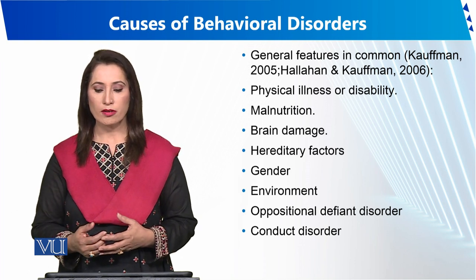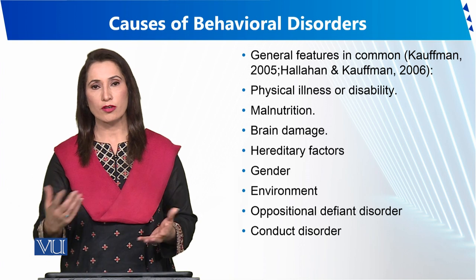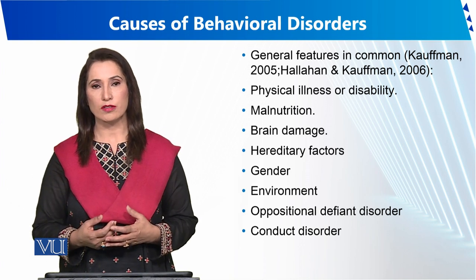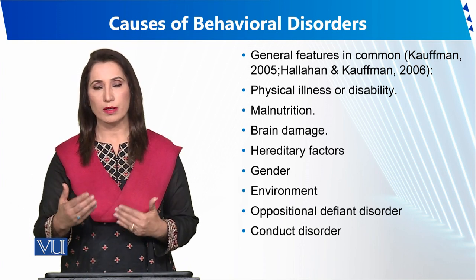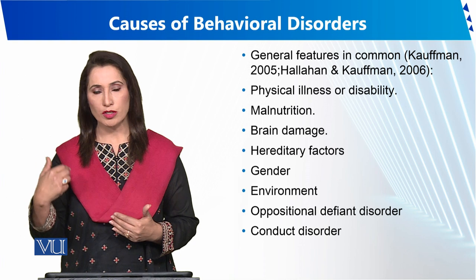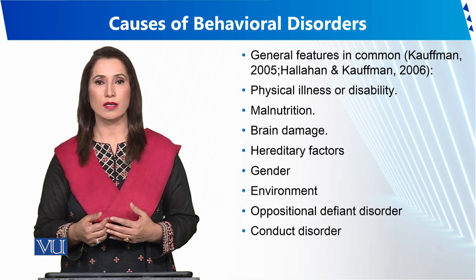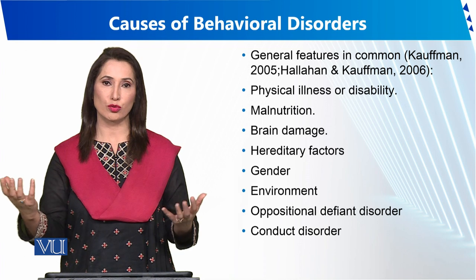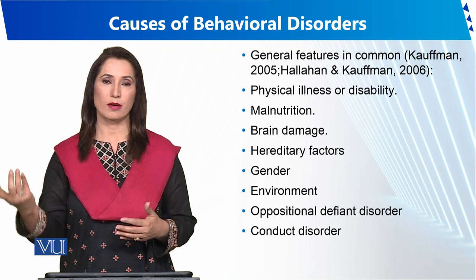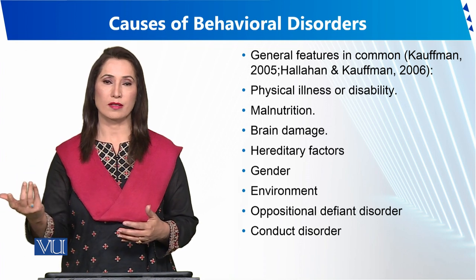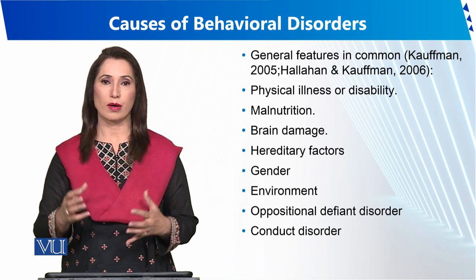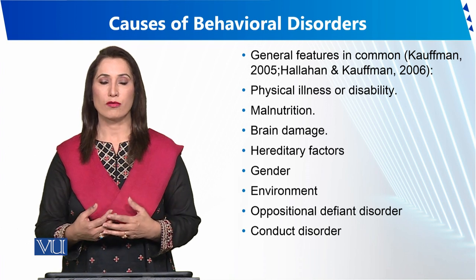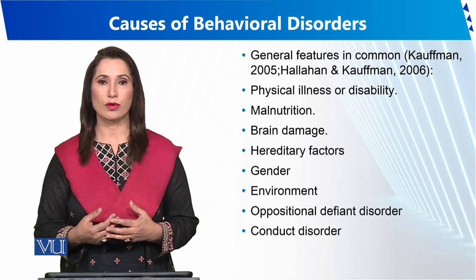There are also hereditary factors. If parents have a history of certain conditions, children can inherit them as well. For example, if parents have diabetes, there is roughly a 50% chance the child may also become a patient of that condition.